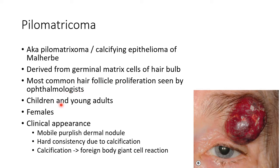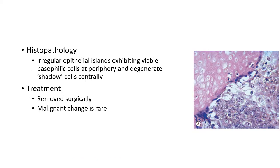Pilomatricoma is more common in children and young adults, and females are more affected than males. Coming to the clinical appearance, it presents as a mobile purplish dermal nodule, as you can see in this picture. It may have a hard consistency due to calcification. This calcification can also cause foreign body giant cell reaction.